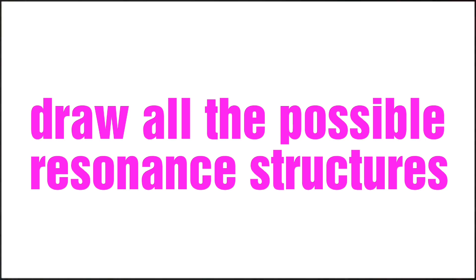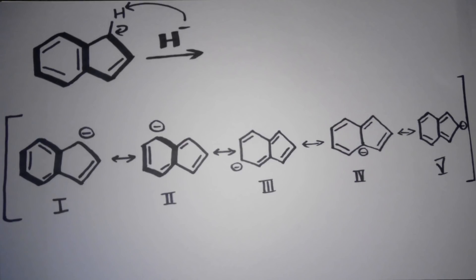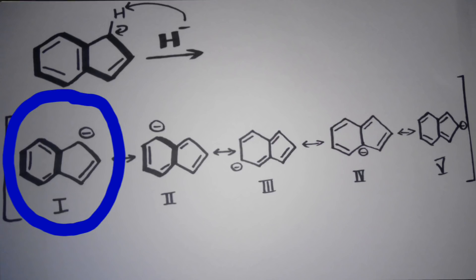First, let us draw all the possible resonant structures for benzocyclopentadienyl anion. It loses a hydrogen ion here and the pair of electrons comes here, leading to the formation of this compound.